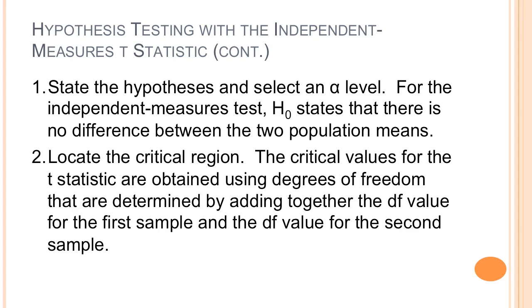State the hypotheses and select an alpha level. The null hypothesis states that there is no difference between the two populations, written as M1 equals M2, or equivalently M1 minus M2 equals zero. Then figure out your degrees of freedom and locate the critical region to find your critical values. For independent samples, degrees of freedom are your sample size for sample one plus your sample size for sample two minus two.